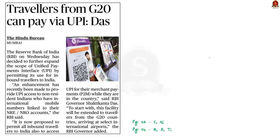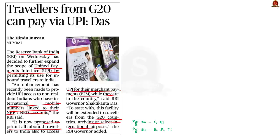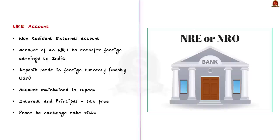Look at this article here. It says that RBI has decided to provide UPI access to non-resident Indians who have international mobile numbers linked to their NRE or NRO accounts. There is also a proposal to permit all inbound travelers to India to access UPI for their merchant payments while in the country, with this facility first provided to travelers from G20 countries arriving at select international airports, to expand the scope of the Unified Payments Interface.